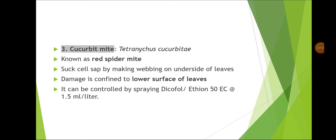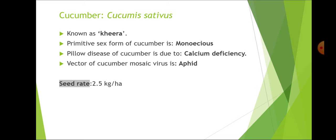Cucurbit mite, Tetranychus cucurbitae, is also known as red spider mite. They suck cell sap by making webbing on the underside of leaves. Damage is confined to the lower surface of leaves. It can be controlled by spraying Dicofol or Ethion 50 EC at 1.5 ml per litre.